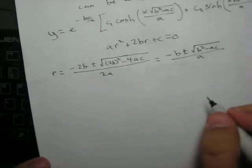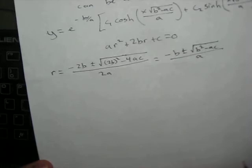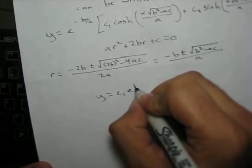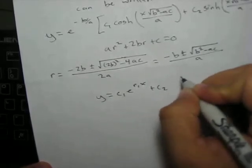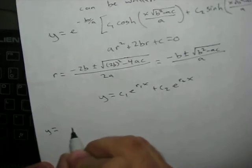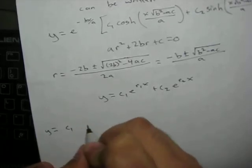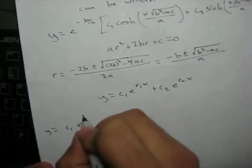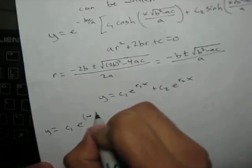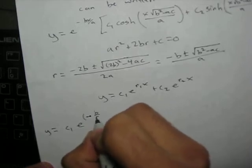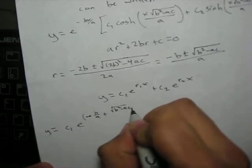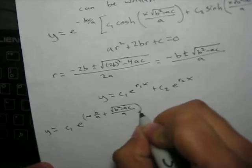We're going to plug this into the general solution, which gives us y = c1*e^(r1*x) + c2*e^(r2*x). So that gives us y equals c1 times e to the ((-b/a) + sqrt(b²-ac)/a) times x.